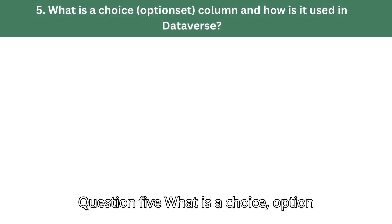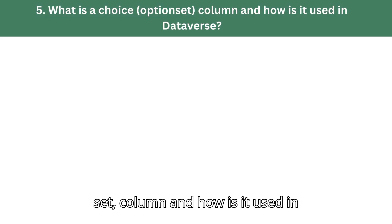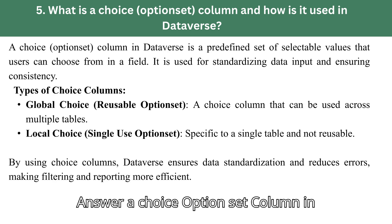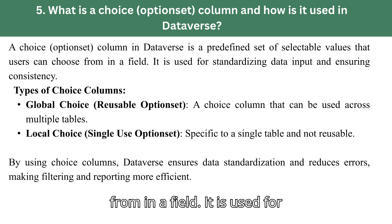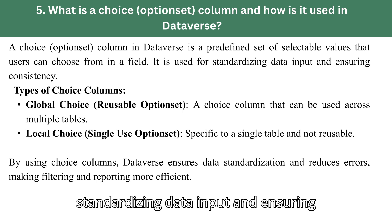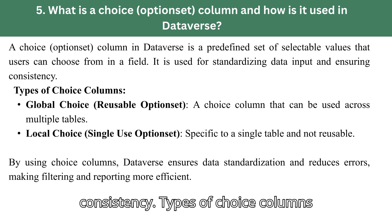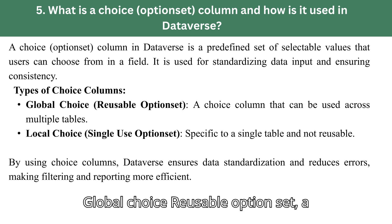Question 5: What is a choice (option set) column and how is it used in Dataverse? Answer: A choice (option set) column in Dataverse is a predefined set of selectable values that users can choose from in a field. It is used for standardizing data input and ensuring consistency. Types of choice columns: Global choice — a reusable option set that can be used across multiple tables.